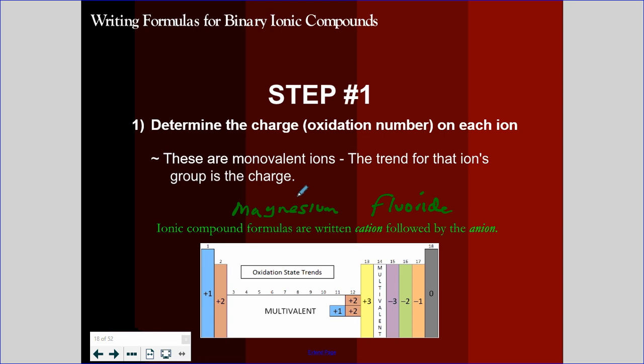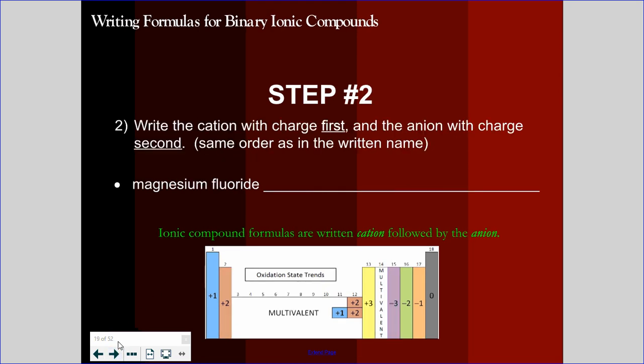We have to determine the charge of each ion. Magnesium comes from group two, and when it forms ions, they have a positive two charge or two plus. Fluorine, when it becomes the fluoride ion, becomes a one minus charge. So write the charges. We're going to write the cation first and then the anion after the cation with their charge.